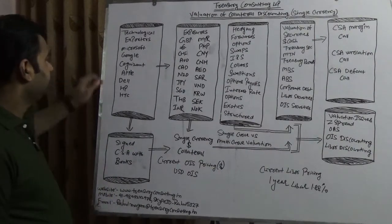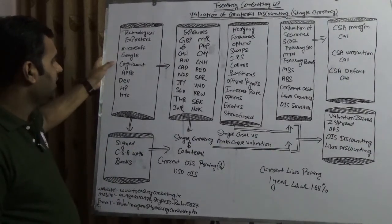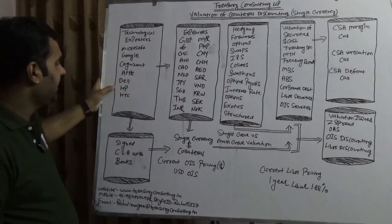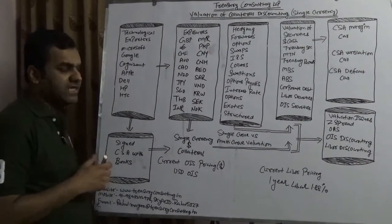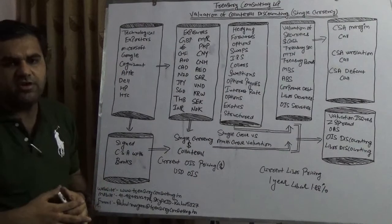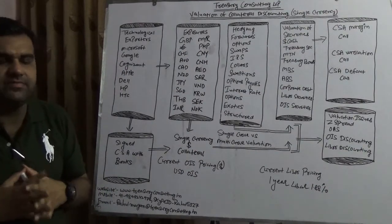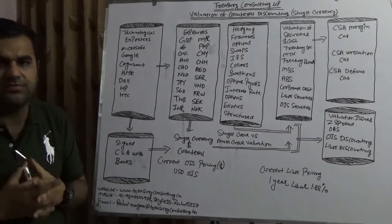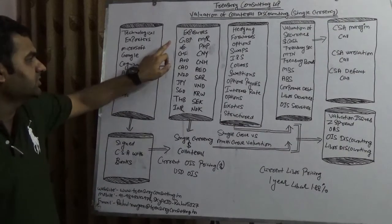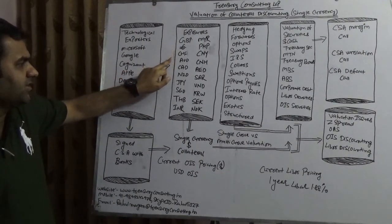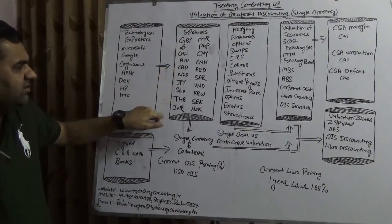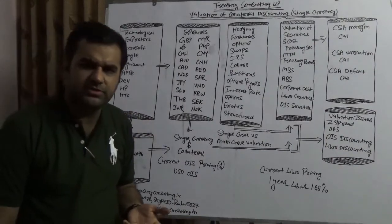We are taking all the big names here, which is Microsoft, Google, Cognizant, Apple, Dell, HP, HTC, Tesla and a lot of others. If you are talking from these big names, we are very well aware that they have an exposure in almost every currency. They have an exposure in GBP, Euro, Swiss franc, Australian dollar, Canadian dollar and you just tell them they have an exposure in almost every currency.